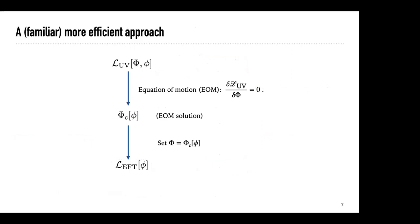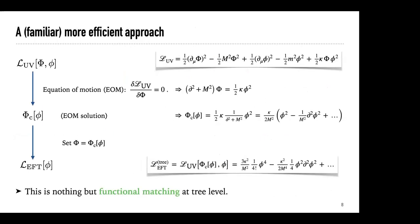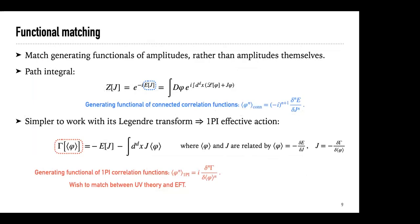There is a more efficient approach: all we need to do at tree level is solve the equation of motion for the heavy field and plug it back into the UV theory Lagrangian. In the toy model at hand, we solve the equation of motion, expand the solution in powers of the derivative, and plug it back in to recover the same operator coefficients. This is completely top-down — we're really deriving the EFT from the UV theory. And what I just showed is nothing but functional matching at tree level.